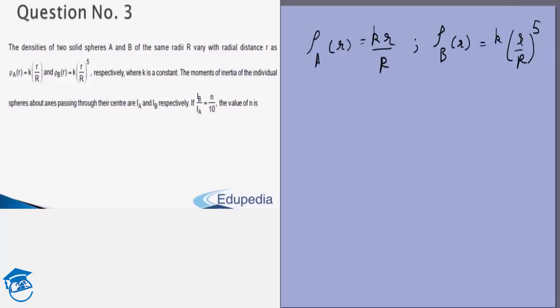So first let's write the definition of moment of inertia. For spheres we can take concentric shells and we can try to find the moment of inertia of one particular shell and add them up.